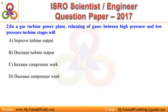Question 2. In a gas turbine power plant, reheating of gases between high pressure and low pressure turbine stages will: A. Improve turbine output. B. Decrease turbine output. C. Increase compressor work. D. Decrease compressor work. Answer is: Improved turbine output.